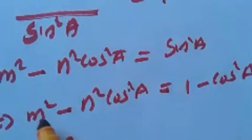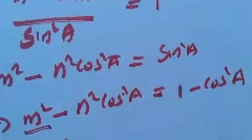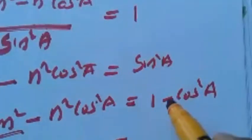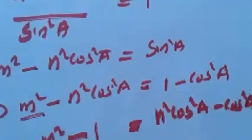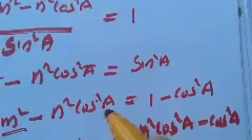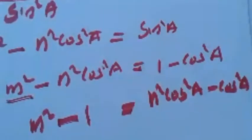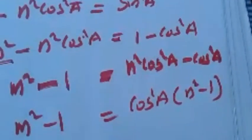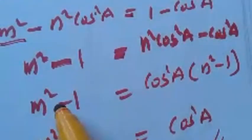Now take terms to the left side: keep m² on the left, take minus 1 to the left side giving m² - 1, and take -n²cos²A to the right side giving +n²cos²A, with -cos²A remaining on the right. So left side is m² - 1, and from the right side take cos²A outside, what remains is n² - 1. Therefore cos²A = (m² - 1)/(n² - 1).